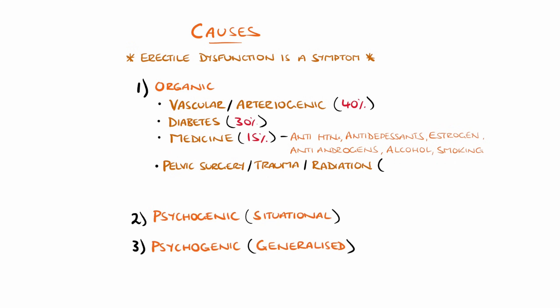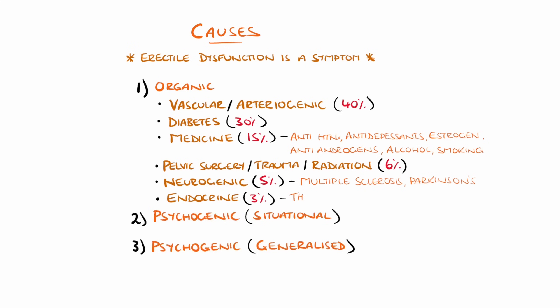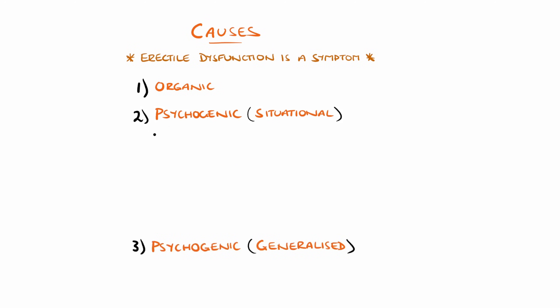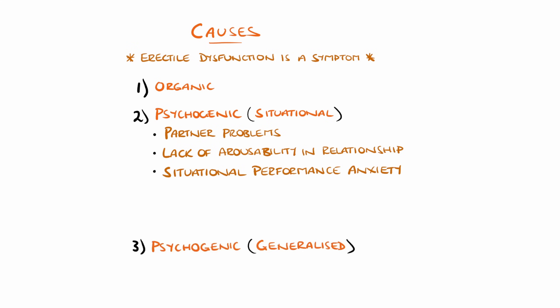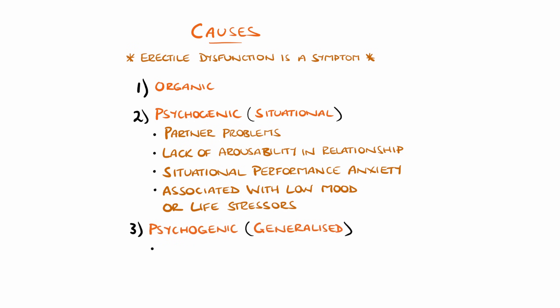Pelvic surgery, radiation or trauma makes up 6%, and neurogenic causes like multiple sclerosis, Parkinson's disease and Alzheimer's make up 5%. Endocrine causes such as hypogonadism or thyroid disturbance make up around 3%. Psychogenic situational causes can include partner-related problems, a lack of arousability in that specific relationship, situational performance anxiety like fear of failure, and can be associated with negative mood states like depression or major life stress. More general psychogenic causes can include ageing-related decline in sexual arousal or libido, chronic disorder of sexual intimacy and a primary lack of sexual arousal.